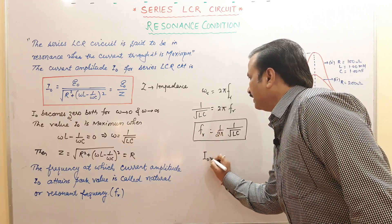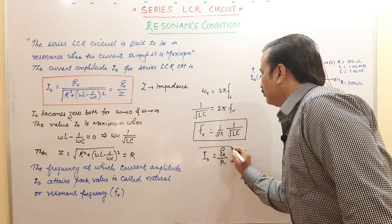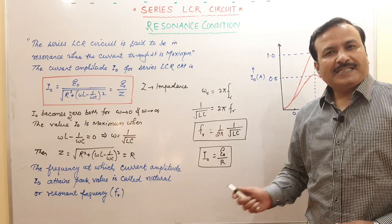How much will be the current in this condition? I naught will be equal to E naught by r. This will be amplitude of the current. Hope it is clear to you.